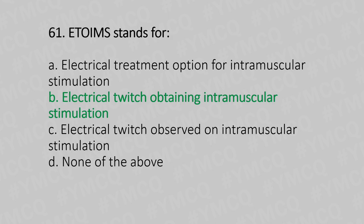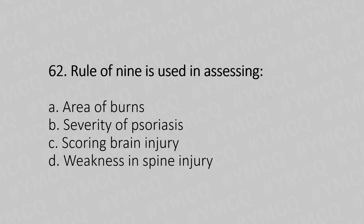Question 62: Rule of nine is used in assessing — Option A: area of burns, Option B: severity of psoriasis, Option C: scoring brain injury, Option D: weakness in spinal injury. The answer is Option A, area of burns.